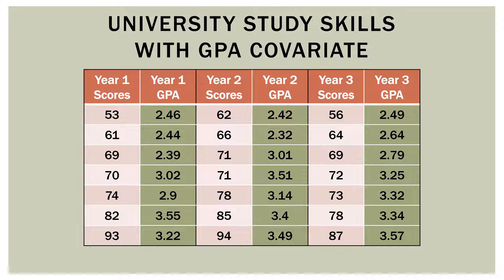So now our data might look like this. We still have our year one, year two, and year three scores, but now we also have our covariate, GPA. For example, the first student in year one scored 53 out of 100 on the study skills assessment and had a GPA of 2.46. This is what our data looks like with the covariate of GPA shown in green.